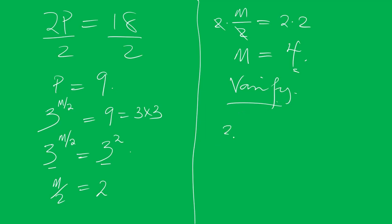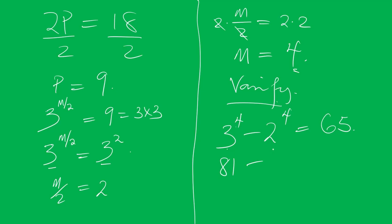Let's verify: 3 to the power of 4 minus 2 to the power of 4. Now 3 to the power of 4 is 3 times 3 times 3 times 3, which is 81, and 2 to the power of 4 is 16. So 81 minus 16 is 65 — proved. Thank you for watching. If you enjoyed the video, please subscribe to my channel, hit the notification bell, and share the video.